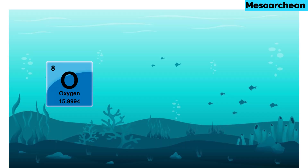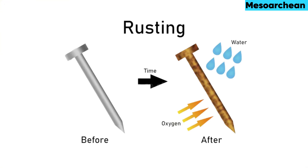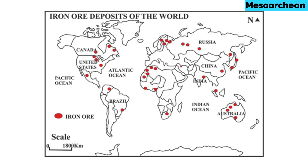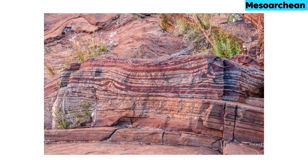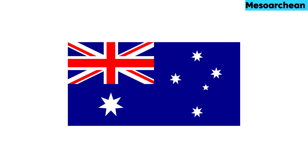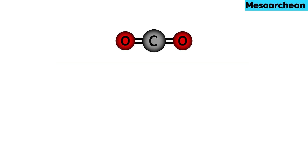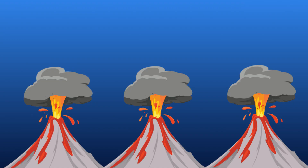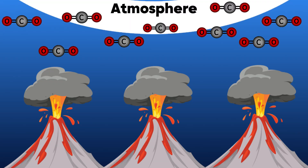As oxygen filled the oceans, it mixed with iron — iron rusts when it reacts with oxygen. So over time, the seafloor collected rusted iron. Most of the world's iron ore deposits were produced in the Archean Eon. We can find banded iron formations all over the world, such as in Australia, Canada, and Russia. It is assumed that intense volcanism during the Archean Eon caused carbon dioxide to be highly concentrated in the atmosphere.